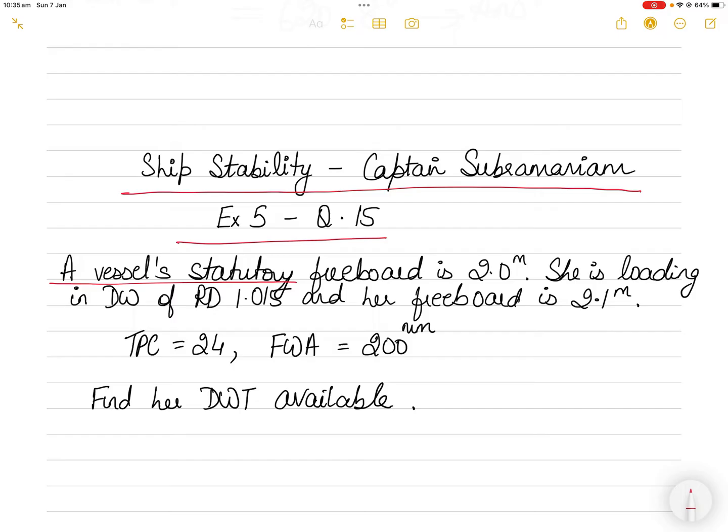A vessel has a statutory freeboard of 2 meters—I will explain what that means—and she is loading in dock water of relative density 1.015. Her freeboard is 2.1 meters. The TPC provided is 24, freshwater allowance is 200 millimeters, and you have to find her deadweight available in dock water.